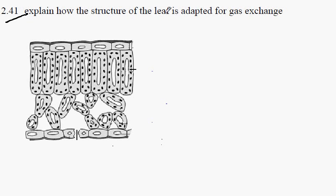Question 241: Explaining the structure of the leaf and how it's adapted for gas exchange. So the gas exchange we're talking about is the movement of carbon dioxide into the leaf and the excretion of oxygen out of the leaf.